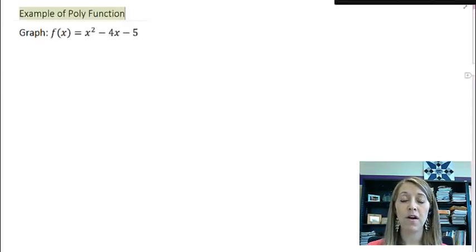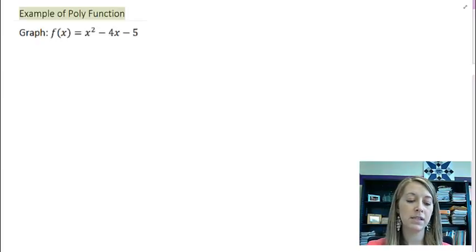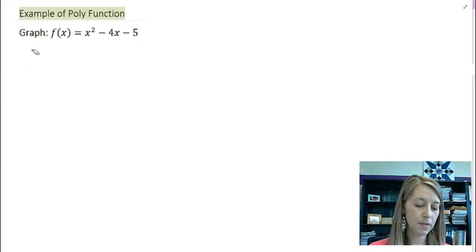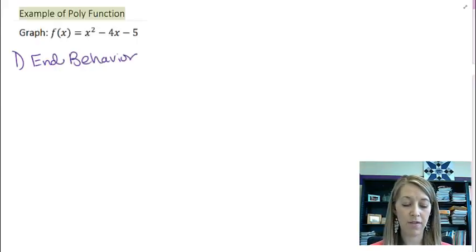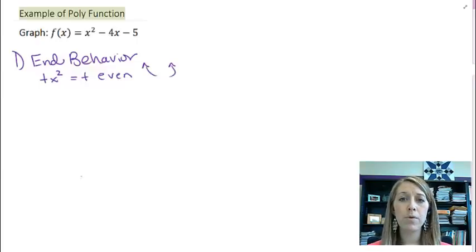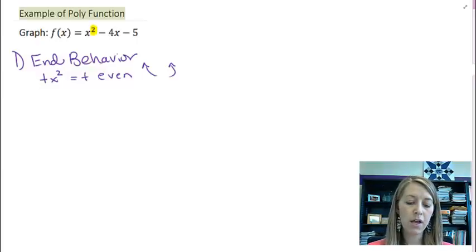The first step that I've outlined is the end behavior. If we follow the exact format of this, we see that this is a positive x squared, my leading term, and so we know that this is positive even. So the left is going up and the right is going up. But we should also be able to determine more than that. This one is a quadratic function, degree two, so we should know more than just left up, right up.